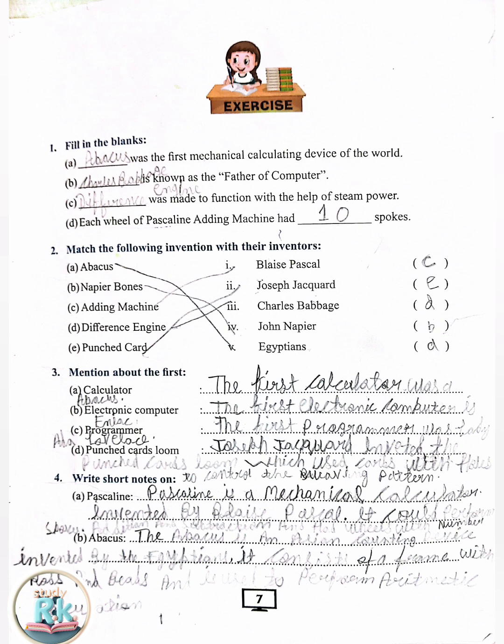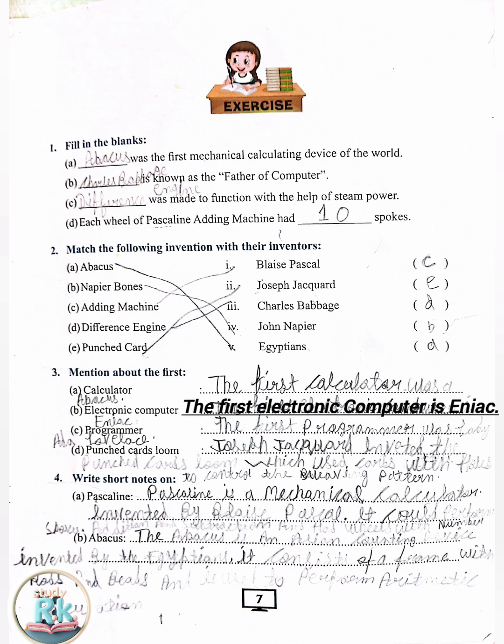3. Mention about the first: A. Calculator — The first calculator was the Abacus. B. Electronic computer — The first electronic computer is ENIAC.